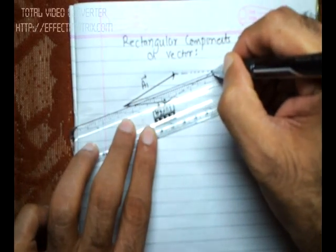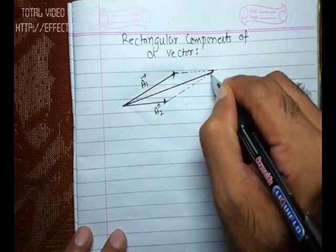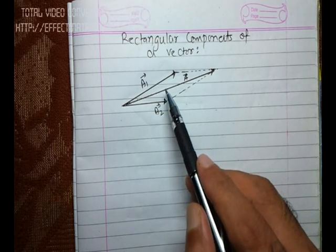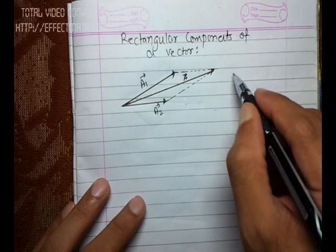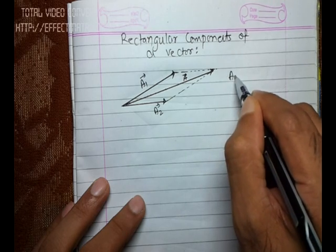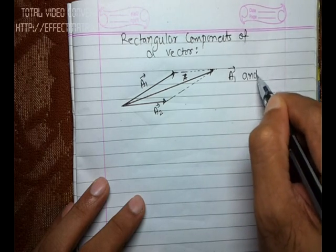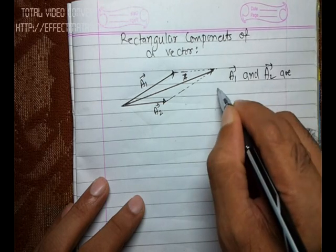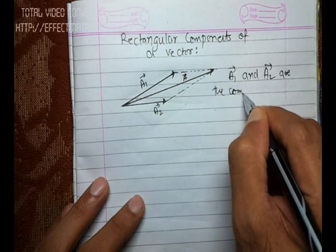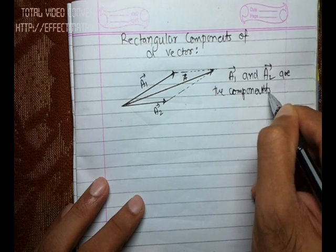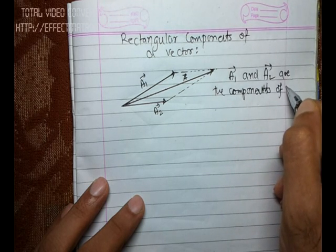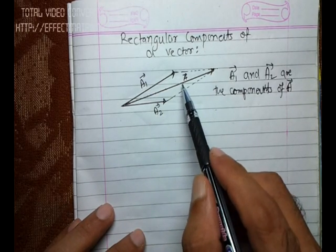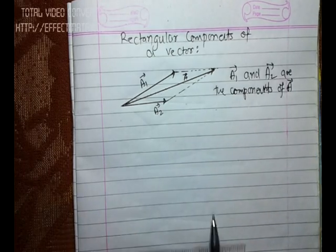This diagonal is vector a, which is the resultant of vector a1 and a2. Conversely, I can also say that a1 and a2 are the components of vector a. So vector a is the resultant of vector a1 and a2, and a1 and a2 are the components of vector a.